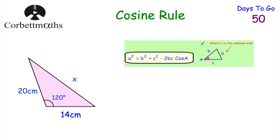Today we're going to be looking at the cosine rule. We've looked previously at the sine rule, so today we're looking at the cosine rule. The cosine rule is: a squared equals b squared plus c squared minus 2bc cos A. So if we've got a triangle with the lengths of two sides b and c, and the angle enclosed between them — angle A — we can find the length of side a, the side opposite the angle. The cosine rule is given to you, so you don't need to learn it off by heart, but if you're doing A-level maths you might end up learning it anyway.